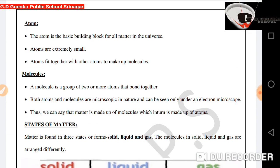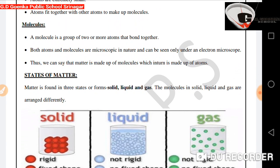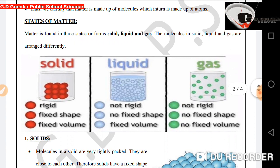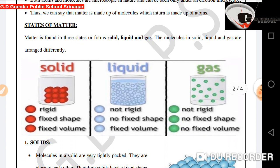Atom. The atom is the basic building block for all matter in the universe. Atoms are extremely small. Atoms fit together with other atoms to make up molecules. A molecule is a group of two or more atoms that bond together. Both atoms and molecules are microscopic in nature and can be seen only under an electron microscope. Thus, we can say that matter is made up of molecules which in turn is made up of atoms.